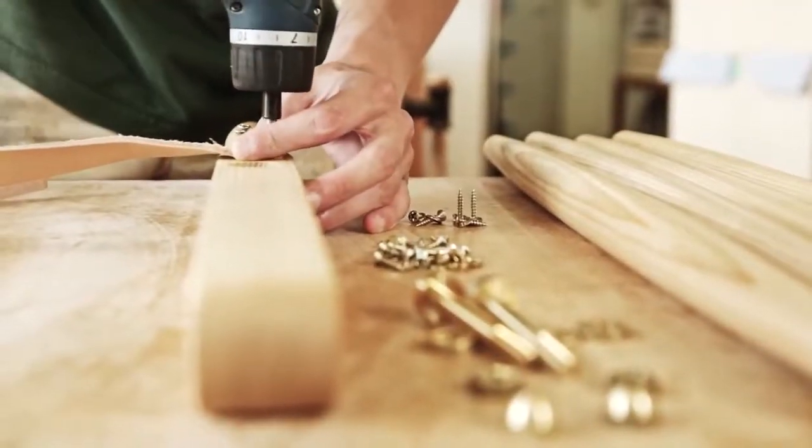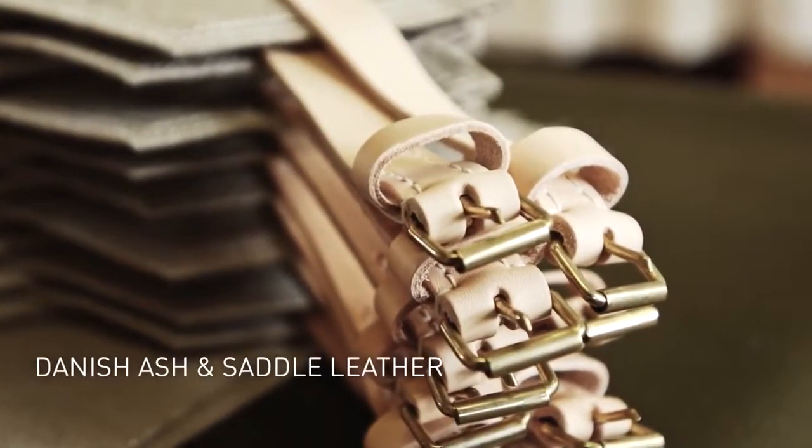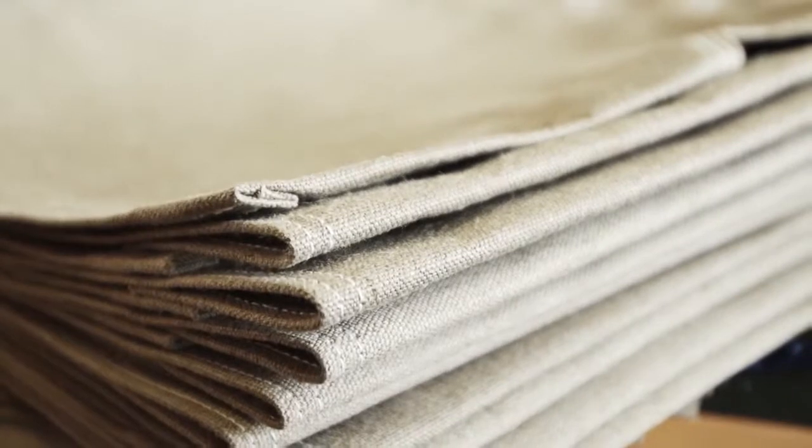Klint's safari chair is made from Danish ash and with saddle leather arms and leg straps. The seat and back are available in different shades of canvas or oxhide.